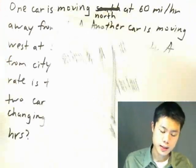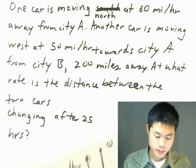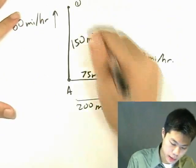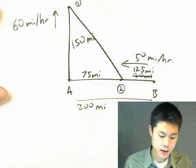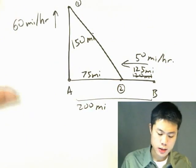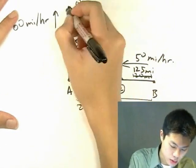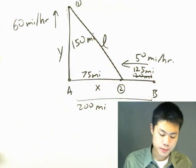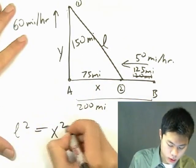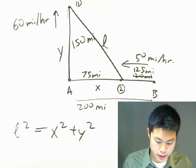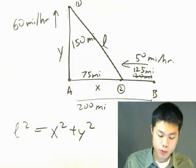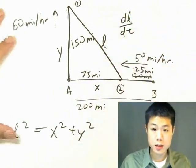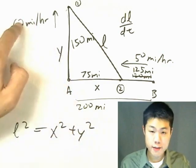The question is asking us to find the rate at which the distance between the two cars is changing. Let's define some variables: call the distance between the cars L, the horizontal distance X, and the vertical distance Y. By the Pythagorean theorem, L squared equals Y squared plus X squared. We want to find dL/dt.